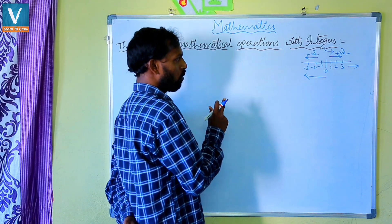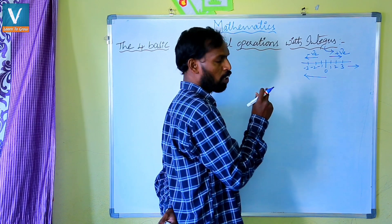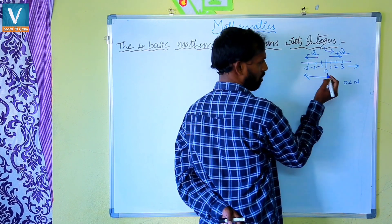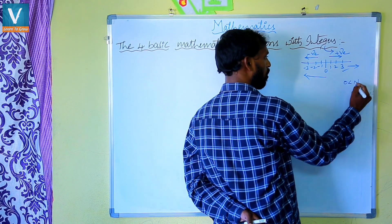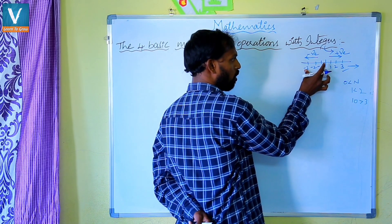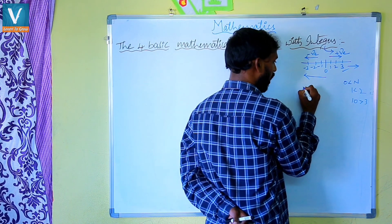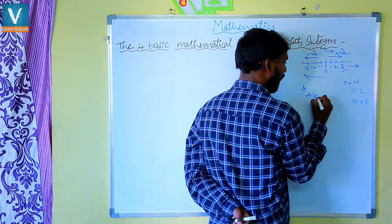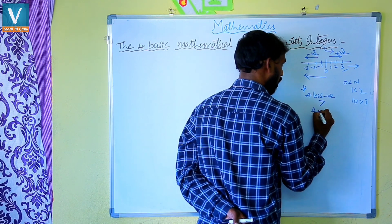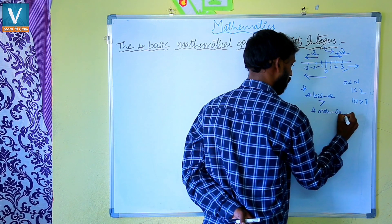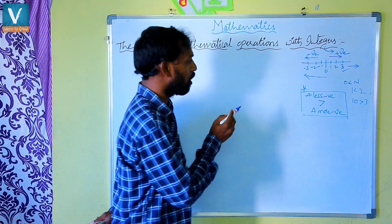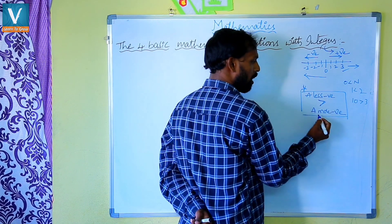Here we have to remind one thing clearly while comparing numbers. Normally we know zero is less than all natural numbers. While comparing negative numbers, we always have to remember only one thing: a less negative number is always greater than a more negative number.